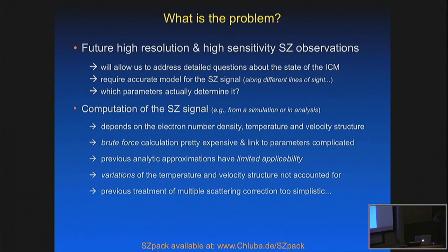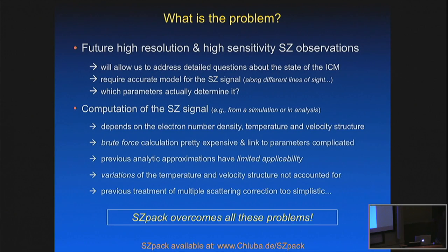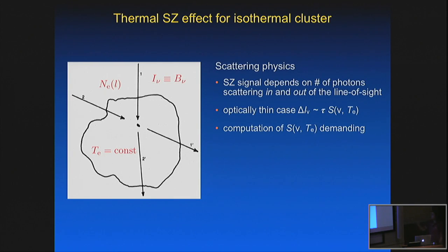Analytic approximations previously used have limited applicability — one of the ideas was to overcome those. SZPAC can include variations in temperature and cluster atmosphere, and also multiple scattering corrections. SZPAC can calculate the Sunyaev-Zel'dovich effect for a given line of sight through a cluster in a very efficient, very fast way, and therefore can be used in the analysis of future high-resolution CMB spectral distortion measurements in the direction of clusters.